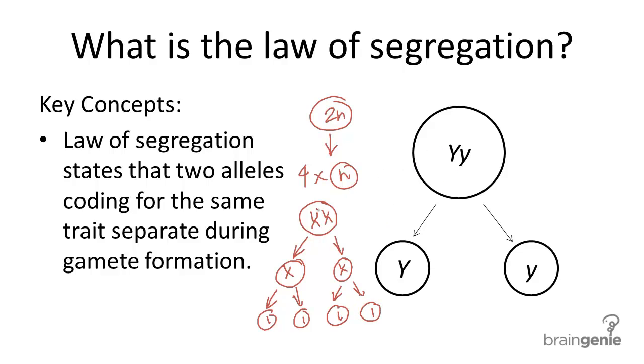What this tells us is that because each allele coding for the same trait is found on only one of the homologous pairs, when the homologous pairs separate, the alleles will separate with them.